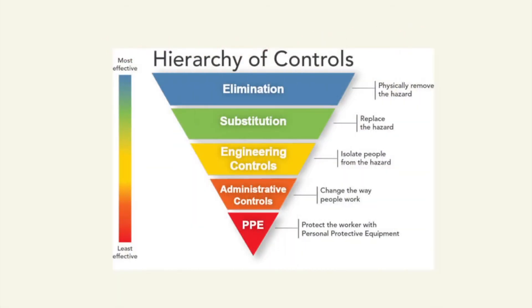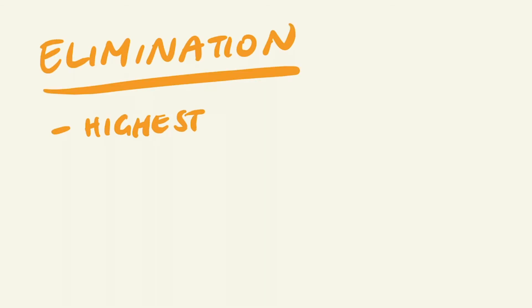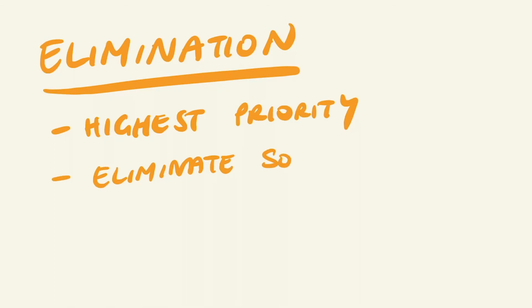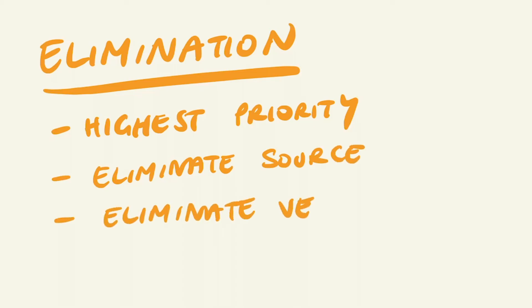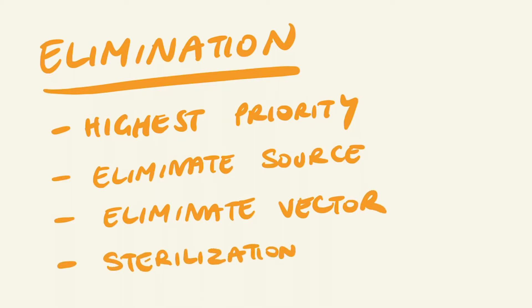In order to manage biological hazards, we use the hierarchy of controls. The complexity of biological hazards in the workplace means that the development of controls needs to be tailored to the worker and their specific occupation in the workplace. With elimination, if possible, elimination of the hazards should be the highest priority. This could mean eliminating the source, such as water reservoirs for Legionella, eliminating the agent or vector by the use of pesticides, or through the use of sterilisation and disinfection techniques such as heat, pressure, and the use of chemicals.